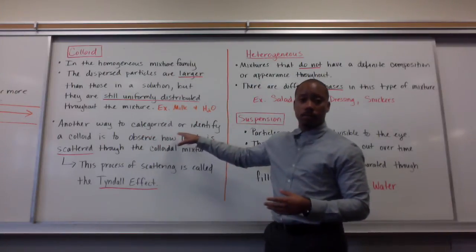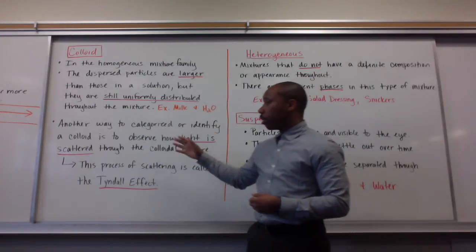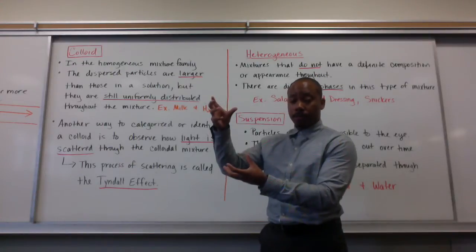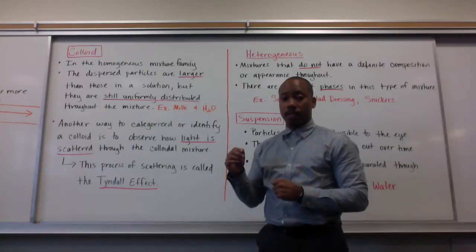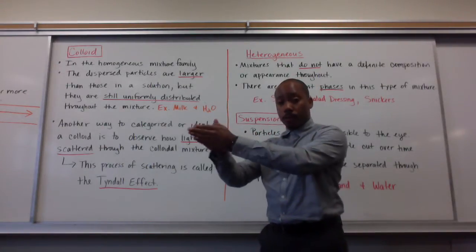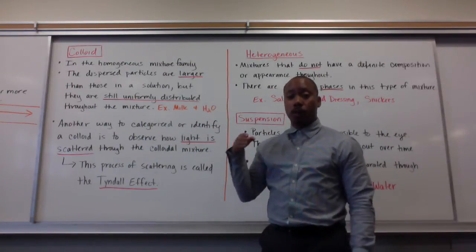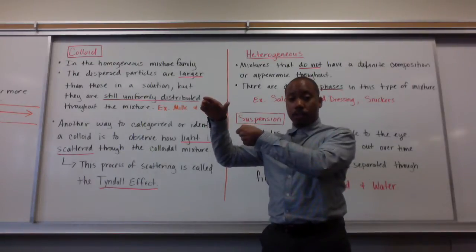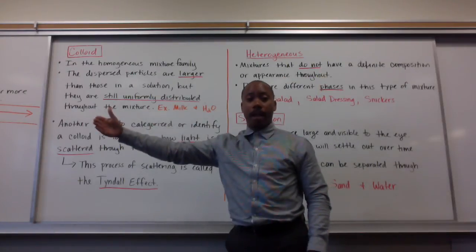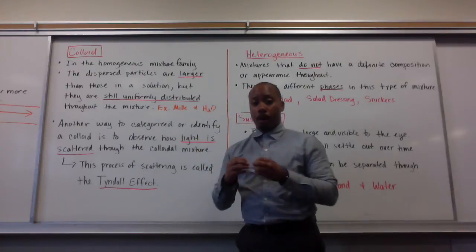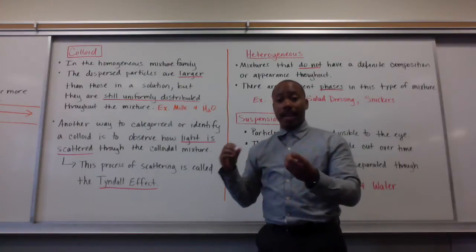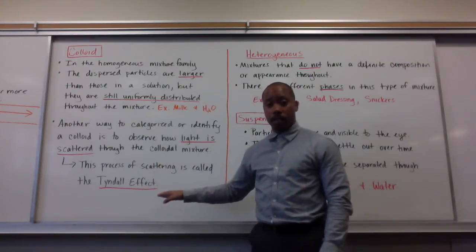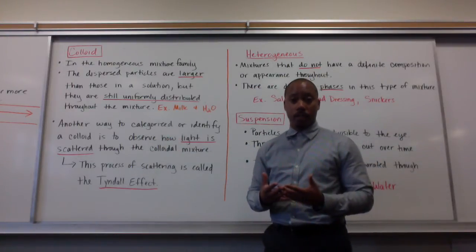We can identify colloids by observing how much light is scattered through that colloidal mixture. If you take that milk and water mixture and shine a light through it, the light would scatter through the colloid — it wouldn't pass straight through as a beam of light; it would scatter everywhere. However, if you did that with a solution like salt water and pointed a laser at it, it would pass right through and hit the wall behind it. The reason it passes through is because the particles are so small. In a colloid, the particles are much larger, so when the light hits them, it scatters. This process of scattering light is called the Tyndall effect, and we use the Tyndall effect to verify that we have a colloid.